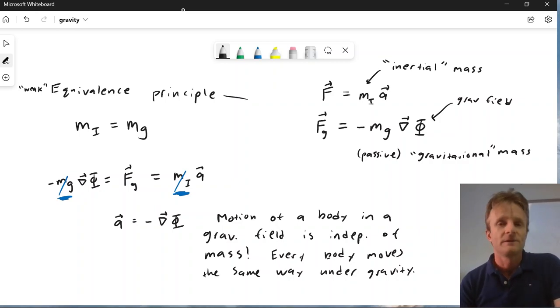So it really looks like a redundancy. Why are we talking about passive gravitational mass and inertial mass? Why do we even have F equals MA when we're talking about gravity? We could get away without F equals MA entirely.